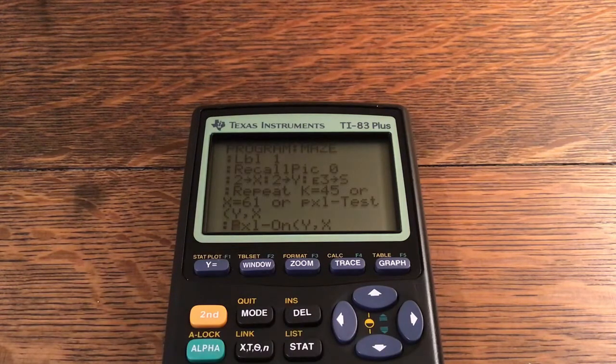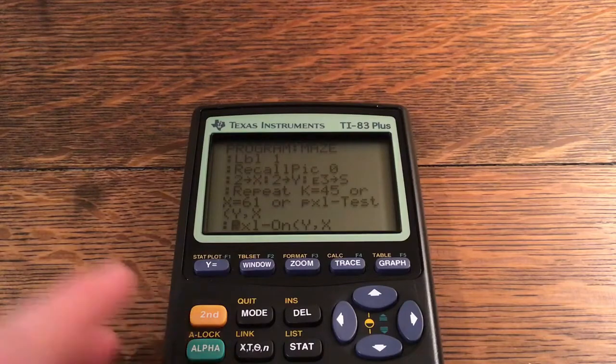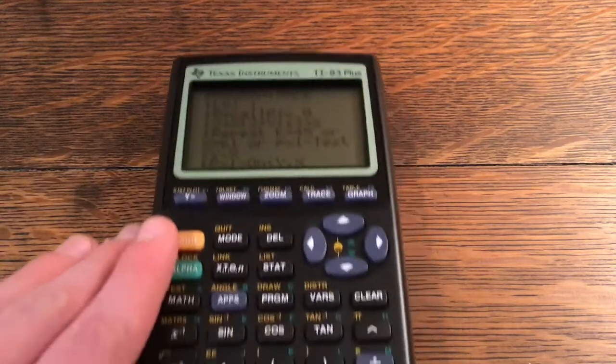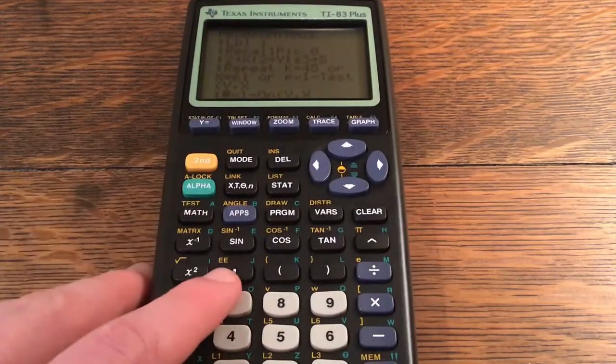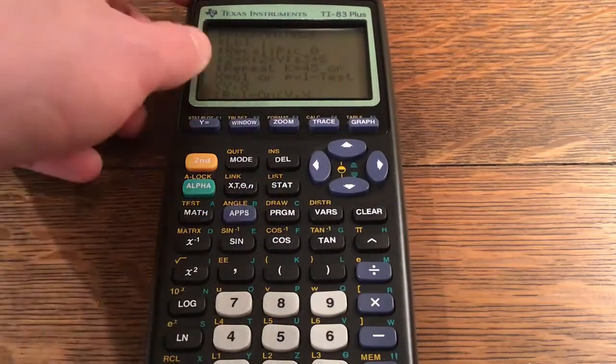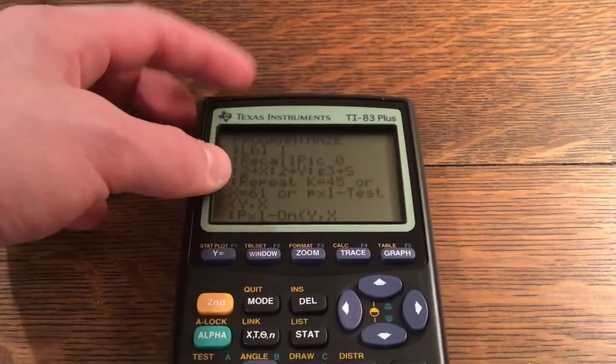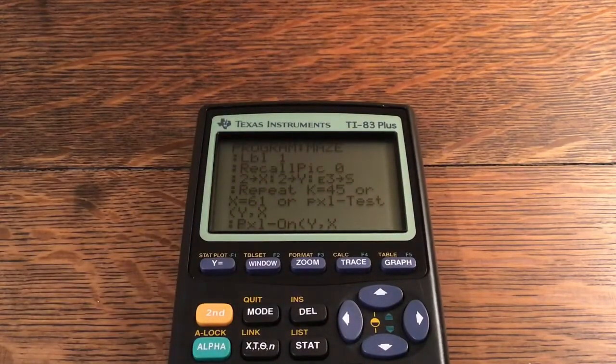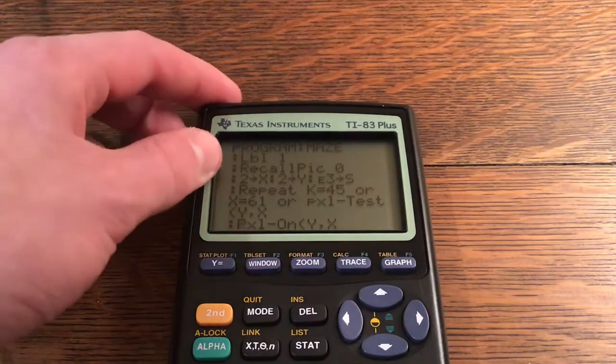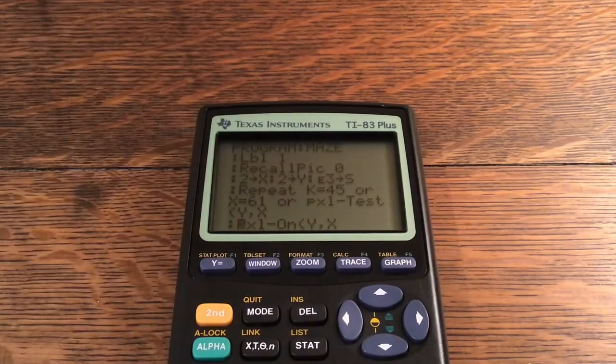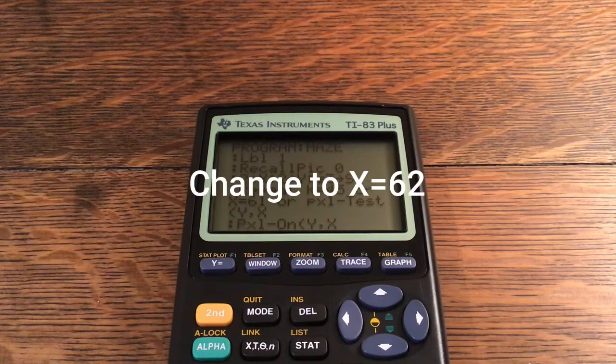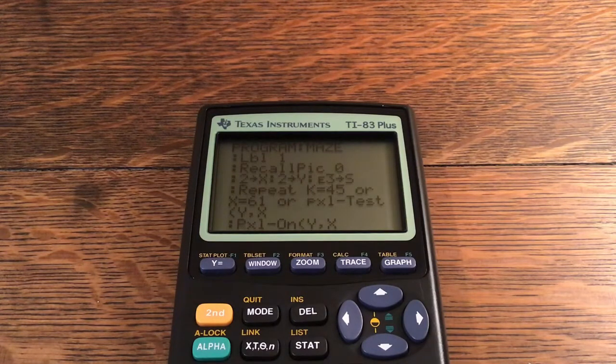StorePic 0, Label 1, RecallPic 0, 2 store into X, 2 store into Y, and E3 store into S, so yes it is a thousand. To find that E which is actually known as the scientific E, use second and comma. That will give you that scientific E. Basically it's for example if you have E1 that's 10, if you have E2 it's 100, so it just adds another zero after it basically.